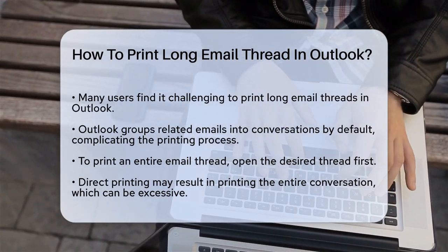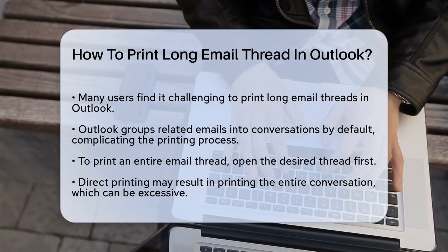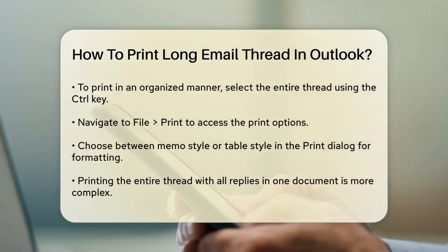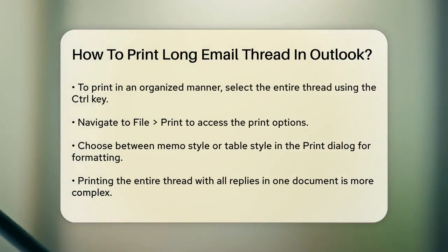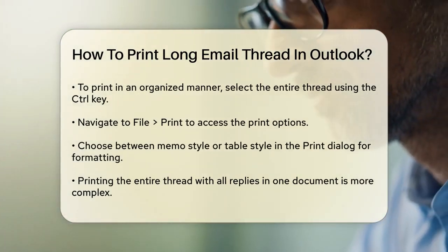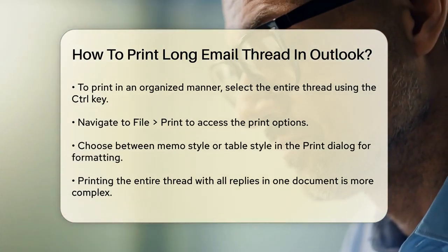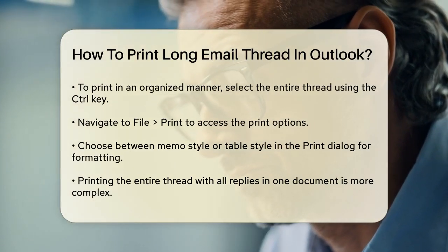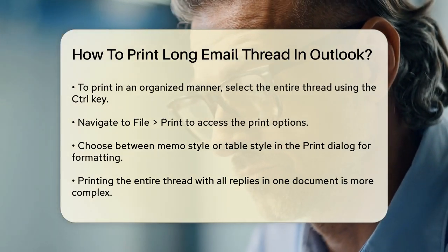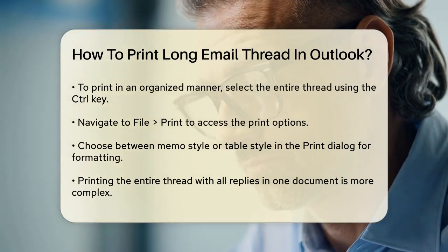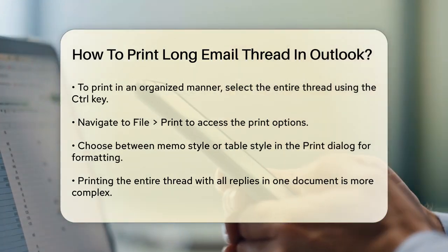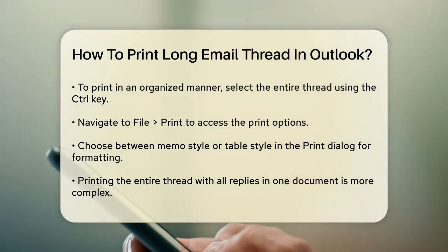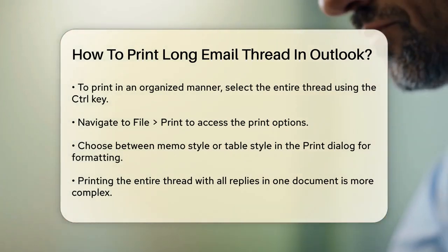To print the entire thread but keep it organized, you can use the following method. Open the email thread you want to print. Select the entire thread by holding down the Control key and clicking on each email in the thread. Go to File, then Print. In the Print dialog, you can choose to print in either memo style or table style. Table style gives you a concise format with details like the sender, subject, and other key information.